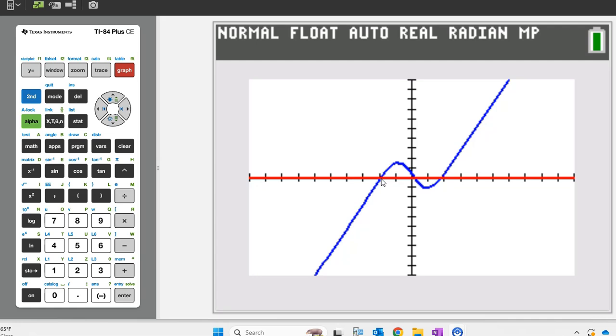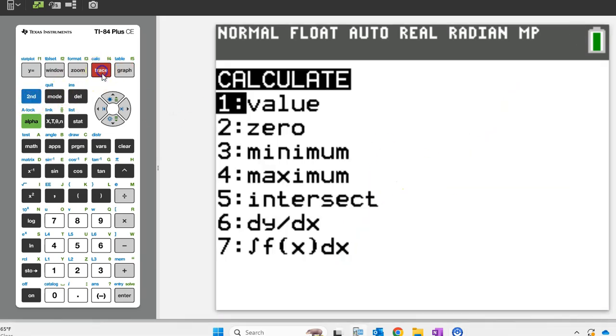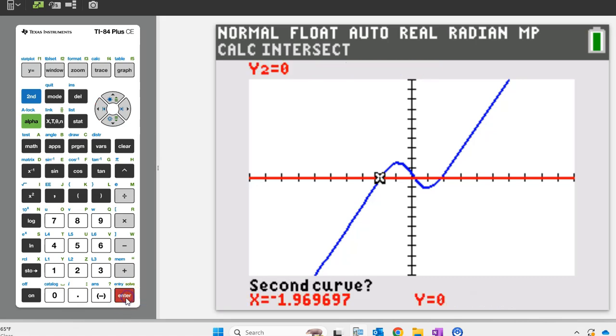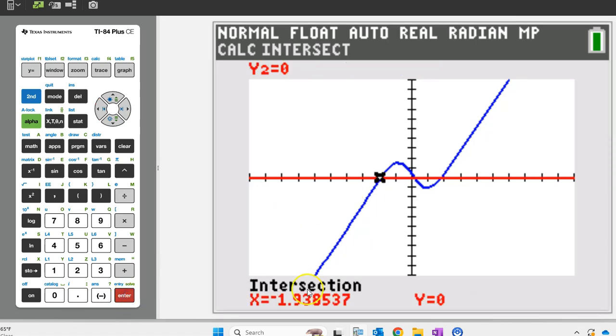There will be three zeros here, here and here. Hit second trace and choose intersect. Move the pointer close to the first point of intersection and hit enter three times. So here's the first zero, negative 1.9385.